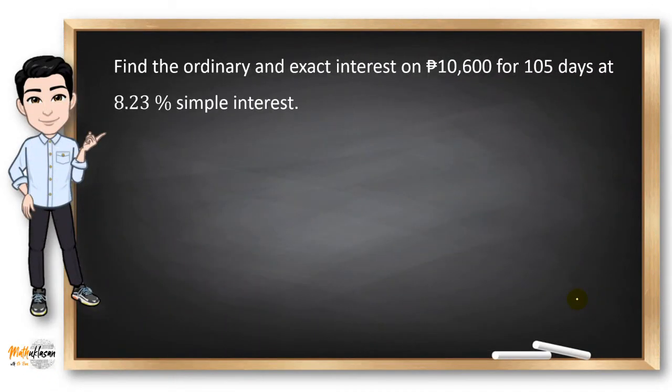Let's try another example. Find the ordinary and exact interest on P10,600 for 105 days at 8.23% simple interest.